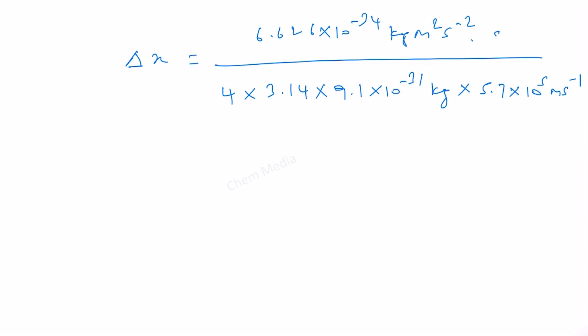We have seconds in numerator and denominator, so seconds will cancel. Kilogram will cancel with kilogram, and meter square divided by meter will leave one meter. So what remains is only meter as the unit.